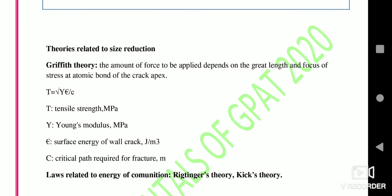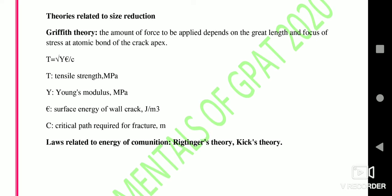There are theories related to size reduction. First is Griffith theory — the amount of force required depends on the length of the material and the stress of atomic bonds to crack the apex of the original material. Just remember the names: Griffith theory, Rittinger theory, and Kick's theory.